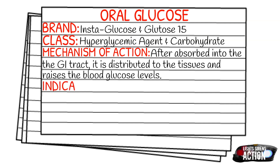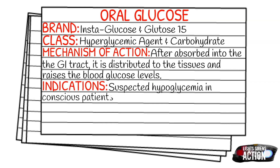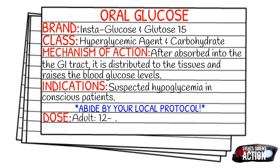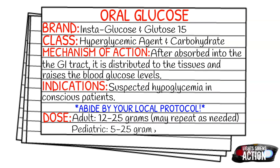Let's touch on dosages. Please abide by your local protocol because dosages do vary from location to location. Your adult dose would be 12 to 25 grams and you may repeat as needed. Most protocols will say to wait 5 to 10 minutes, then test the blood sugar again to determine if more is needed. For pediatrics, it's going to be 5 to 25 grams and, just like with adults, you may repeat as needed.